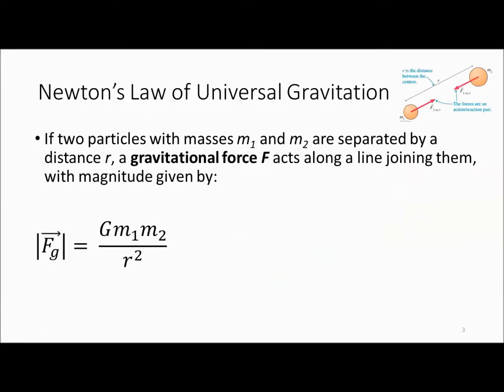Let's say we have two particles, mass 1 and mass 2, separated by distance r. The gravitational force acts along a line joining them with the magnitude given by this equation.